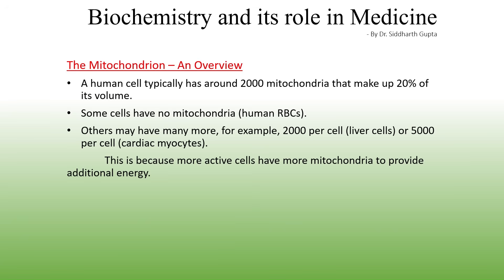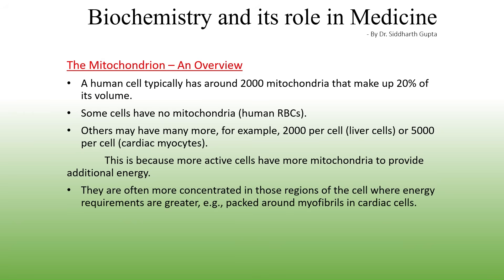The number of mitochondria per cell depends on how active the cells are. Highly active cells have greater energy requirements and more mitochondria so that more ATP can be produced. Within cells too, there is a higher concentration of mitochondria in regions where energy requirements are greater — for example, around the contractile myofibrils in cardiac muscle cells and at synapses and axon terminals in neurons.